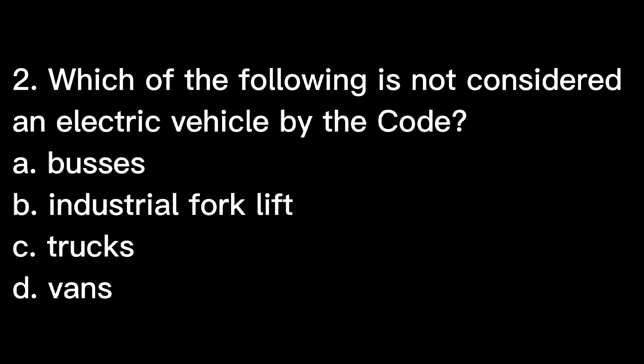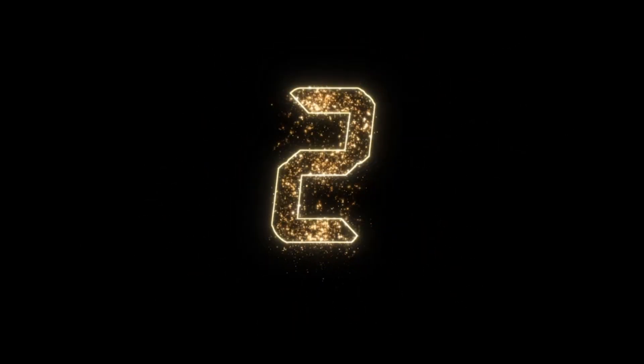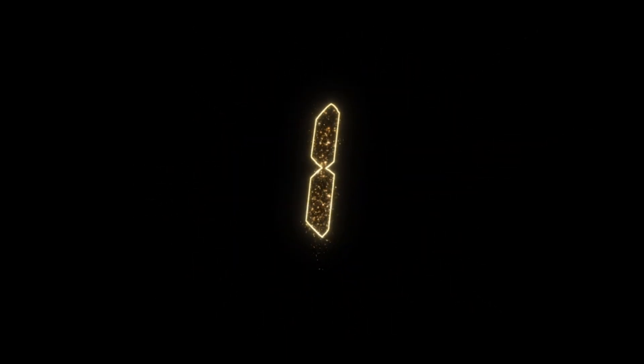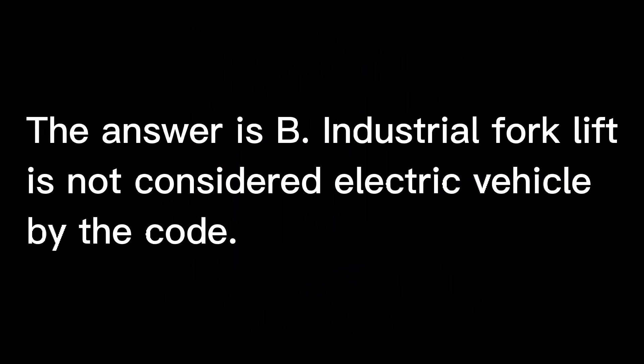Question 2: Which of the following is not considered an electric vehicle by the code? A. Buses, B. Industrial forklift, C. Trucks, D. Vans. The answer is B. Industrial forklift is not considered an electric vehicle by the code.